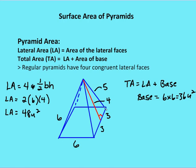Five is really my hypotenuse, which is the lateral edge of the pyramid. The lateral area is going to be four times — because I have four congruent triangles — one-half base times height. So it's four times one-half, which is two, times the base edge of six, times the slant height of four. So I get two times six, which is 12, times four, giving 48 square units for my lateral surface area.